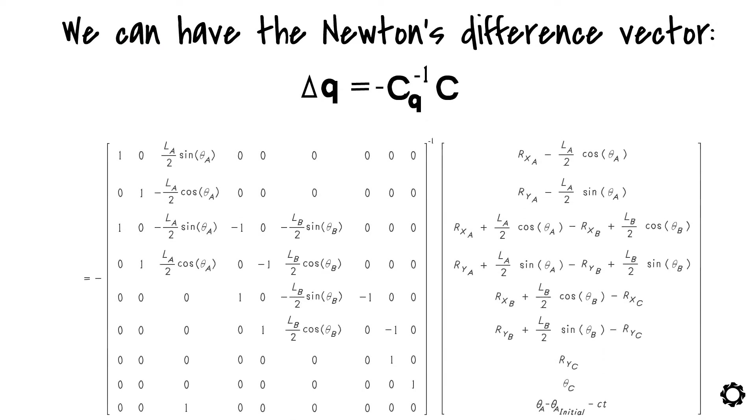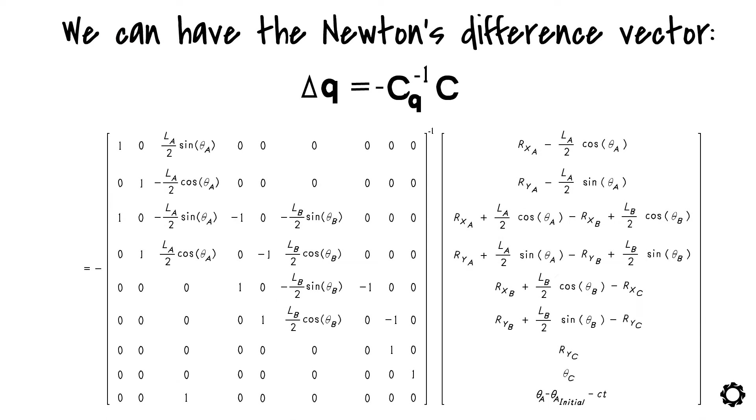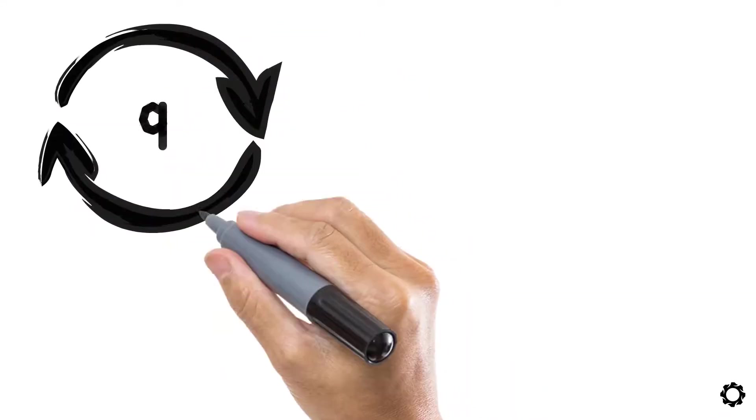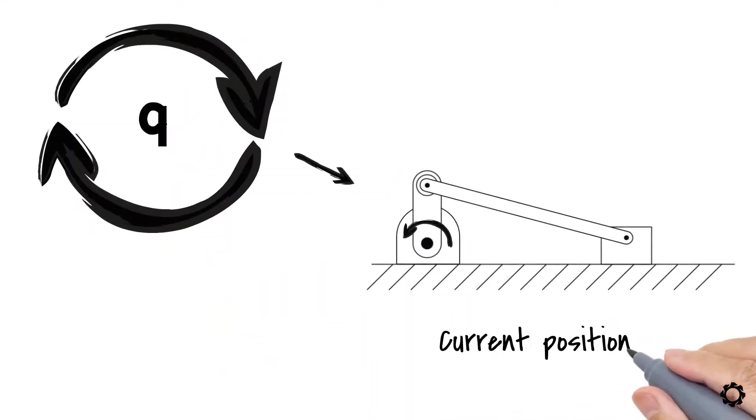That is, which we can use in our iterative procedure to find our vector of generalized coordinates that satisfy the current position of our mechanism.